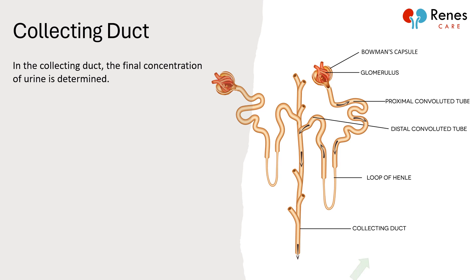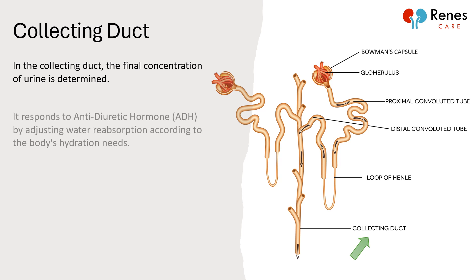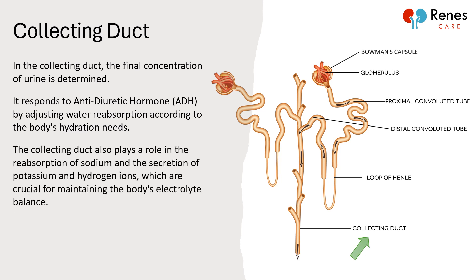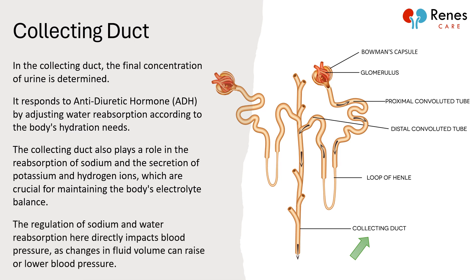In the collecting duct, the final concentration of urine is determined. It responds to antidiuretic hormone, or ADH, by adjusting water reabsorption according to the body's hydration needs. The collecting duct also plays a role in the reabsorption of sodium and the secretion of potassium and hydrogen ions, which are crucial for maintaining the body's electrolyte balance. The regulation of sodium and water reabsorption here directly impacts blood pressure, as changes in fluid volume can raise or lower blood pressure.